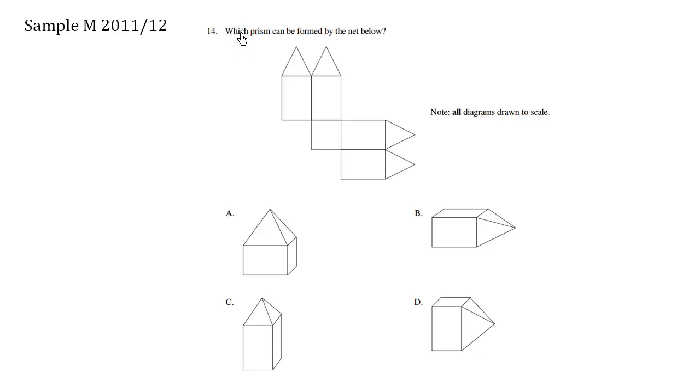Let's take a look here at question 14. Which prism can be formed by the net below? So what we have here is this pencil-like shape.